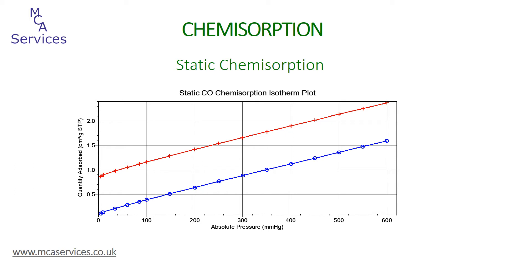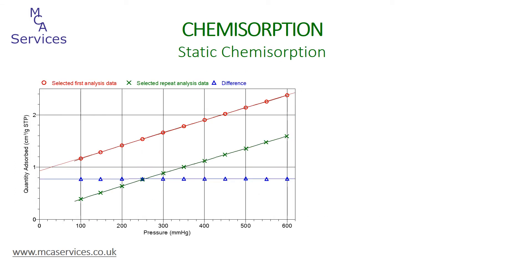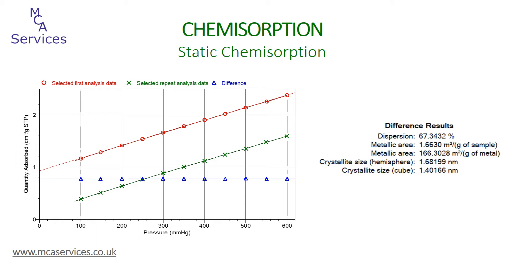Since the chemisorbed adsorbate remains bound to the surface throughout, this second adsorption is due entirely to the physisorption process. So if we now subtract the second isotherm — physisorption only — from the first isotherm, which includes both physisorption and chemisorption, and we do this at each adsorption pressure, we obtain just the volume of the chemisorbed adsorbate. This difference is shown by the blue plot, and these volumes are due solely to chemisorption. From the chemisorption plot we can now calculate our dispersion, our active metal area, and particle size. We've covered the basis of these calculations in the previous chemisorption presentation.